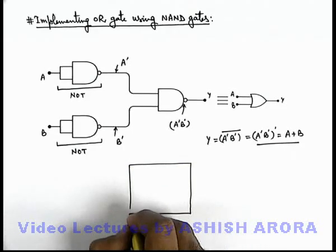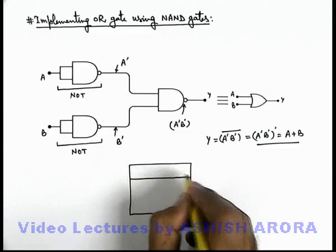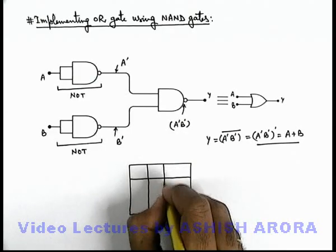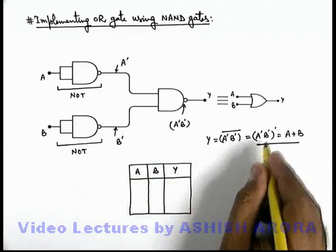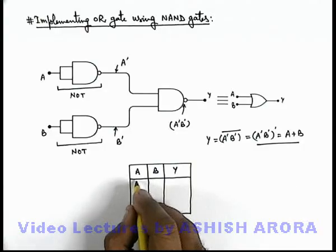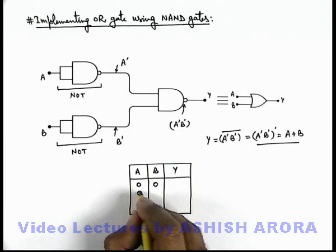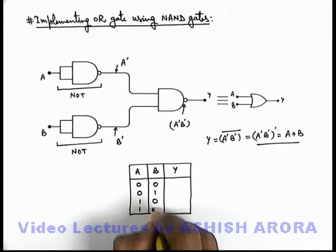In which we use two inputs A and B and corresponding output Y. We analyze on the basis of this expression. There are four combinations of two inputs: 0 0, 0 1, 1 0, and 1 1.